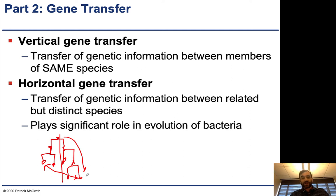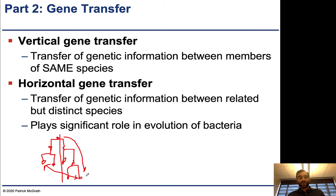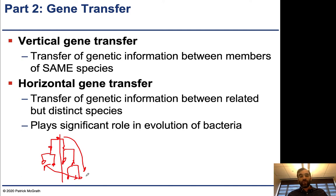Antibiotic resistance is something we discussed — it evolves very rapidly. If a bacterium is able to pick up some sort of resistance gene from another bacterium, it's obviously going to be at a great advantage.